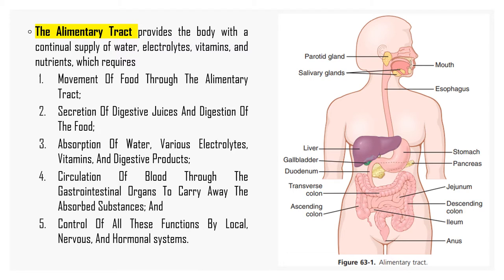The alimentary tract provides the body with a continual supply of water, electrolytes, vitamins, and nutrients, which require movement of food through the alimentary tract, secretion, absorption, circulation of blood through the gastrointestinal organs to carry away the absorbed substances, and also control of all these functions by local nervous system and hormonal system. You can see on the screen the figure showing the entire alimentary tract.